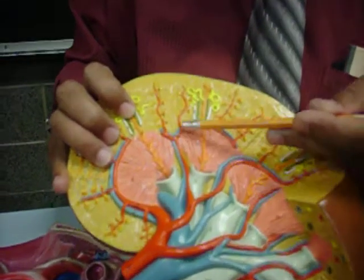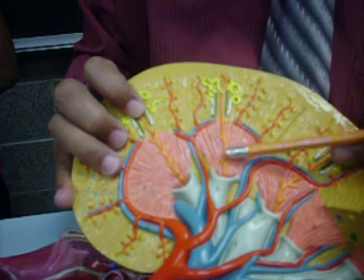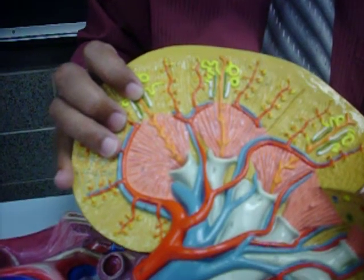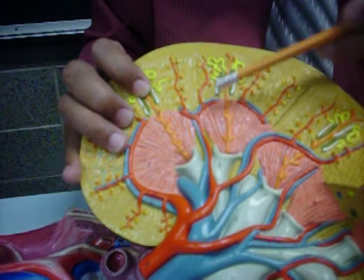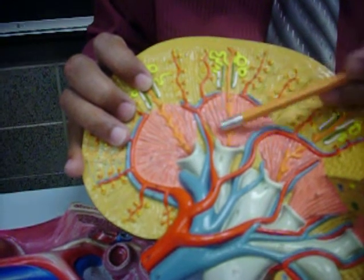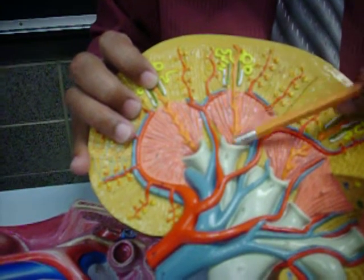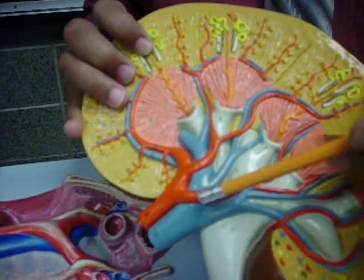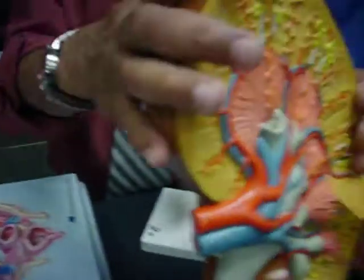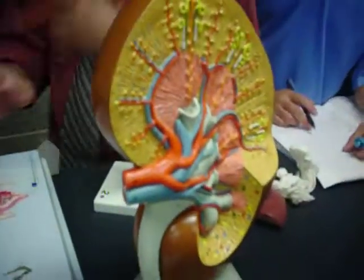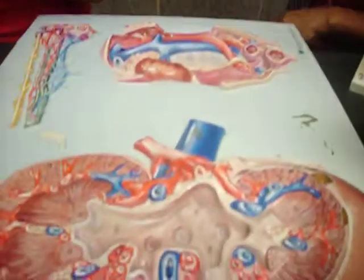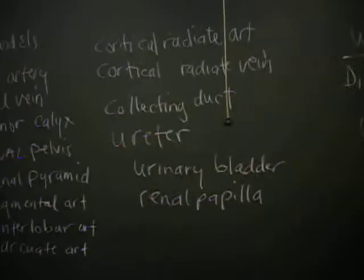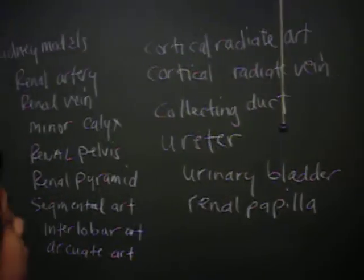And the last two: this is the collecting duct — and the renal pyramid. This one would be the renal pyramid. And then the segmental artery. Collecting duct to the renal papilla. That's it — cortical radiate. That's it, right?